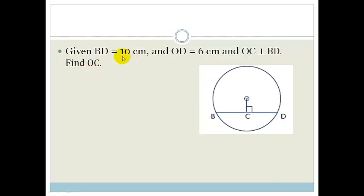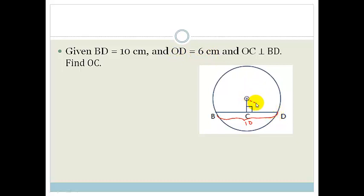It says that we are given that BD is 10 cm, OD is 6 cm, and OC is perpendicular to BD, and it says find OC. So let's go through this again. Given that BD equals 10 cm — the whole of this is 10 cm. They say OD equals 6 cm. So OD is 6 cm, and that tells us that OC is perpendicular to BD.